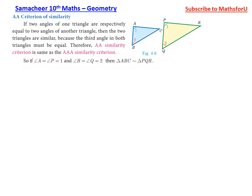Now, the AA criterion. AA stands for Angle-Angle. If two angles of one triangle are respectively equal to two angles of another triangle, then the two triangles are similar, because the third angle in both triangles must also be equal.